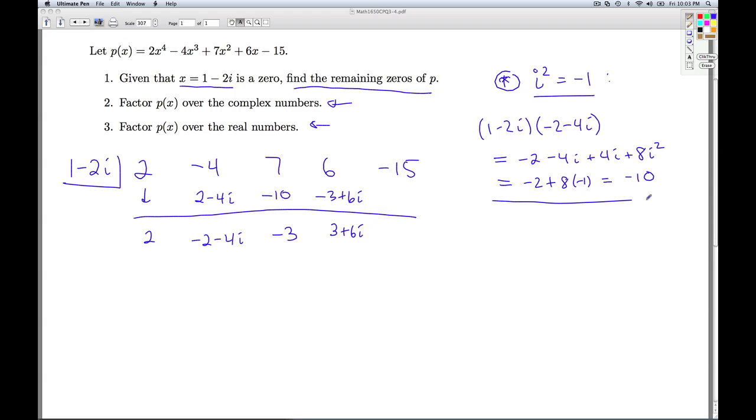And now I multiply these out. (1 - 2i) times (3 + 6i). 1 times 3 is 3, 1 times 6i is 6i, -2i times 3 is -6i, -2i times 6i is -12i². The i's cancel out. I get 3 - 12. i² is -1, so this really gives me a positive 15. And miracle of miracles, I get a remainder of 0.